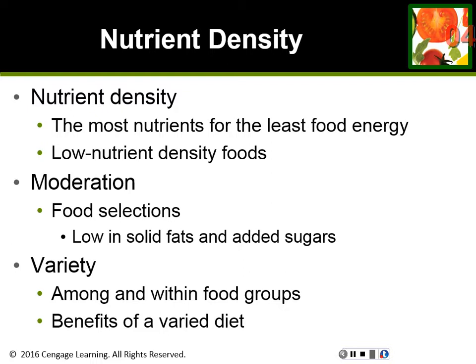Nutrient density incorporates the concept of adequacy and calorie control — you want the most nutrients for the fewest amount of calories. For example, if you get 300 milligrams of calcium from an ounce and a half of cheese, and you also get 300 milligrams of calcium from a cup of skim milk, but the cheese has twice as many calories, which one is the better choice? The milk — because you're getting the same amount of calcium for fewer calories.